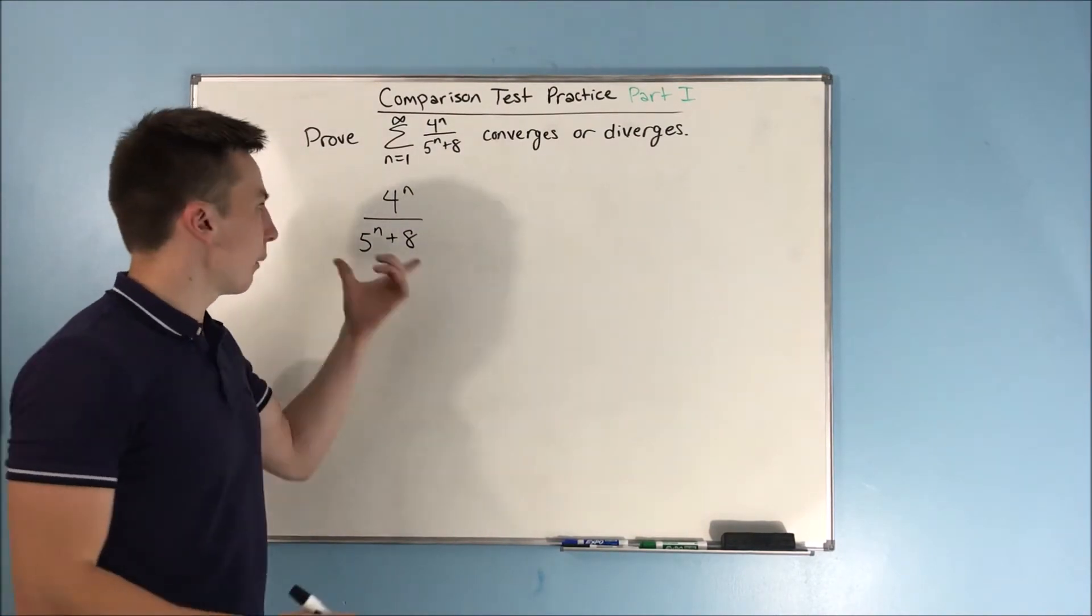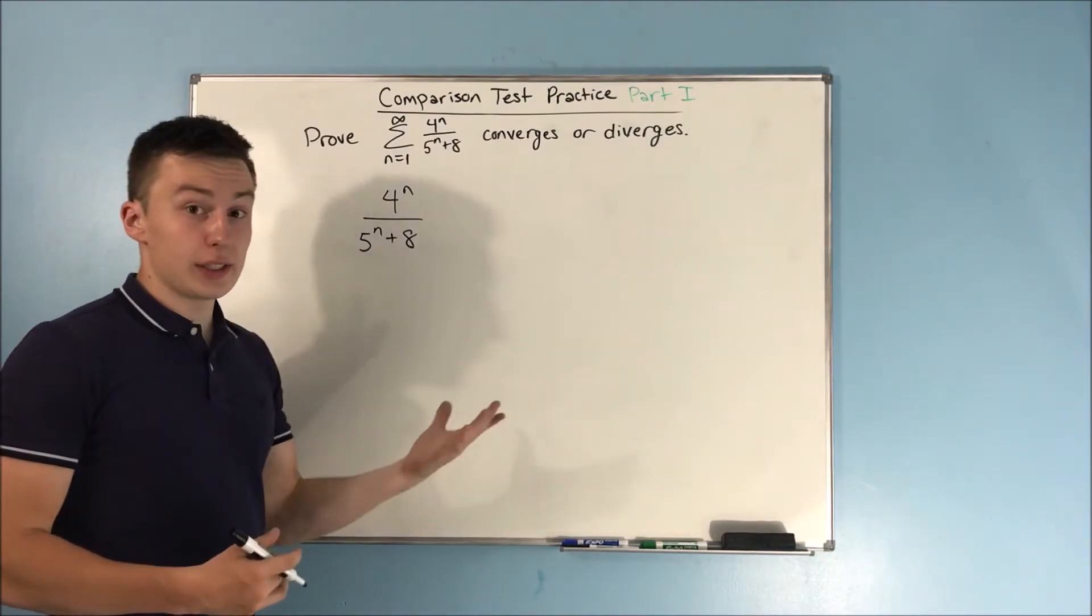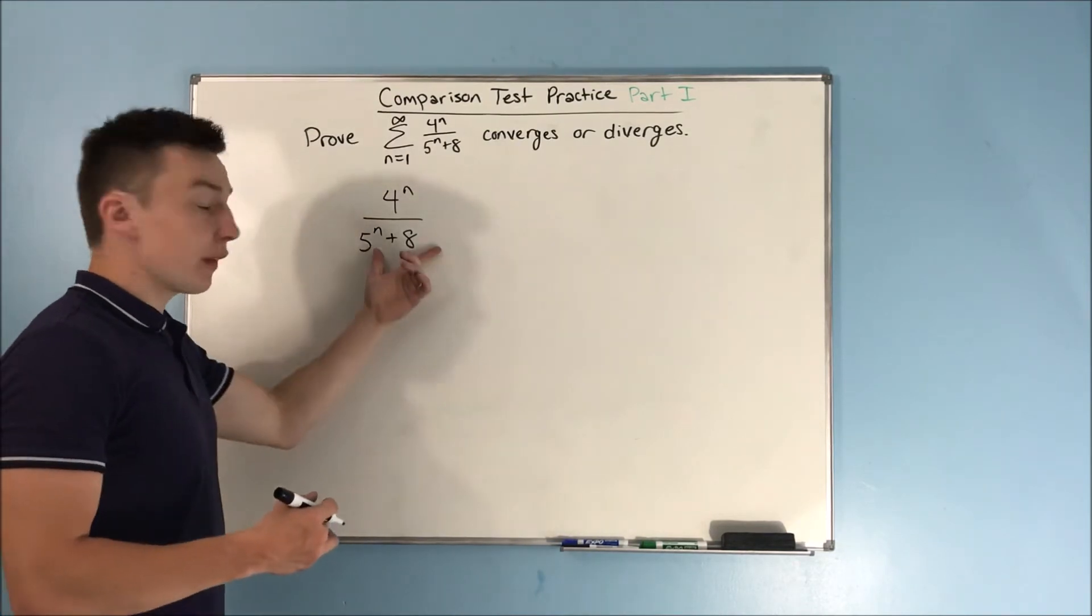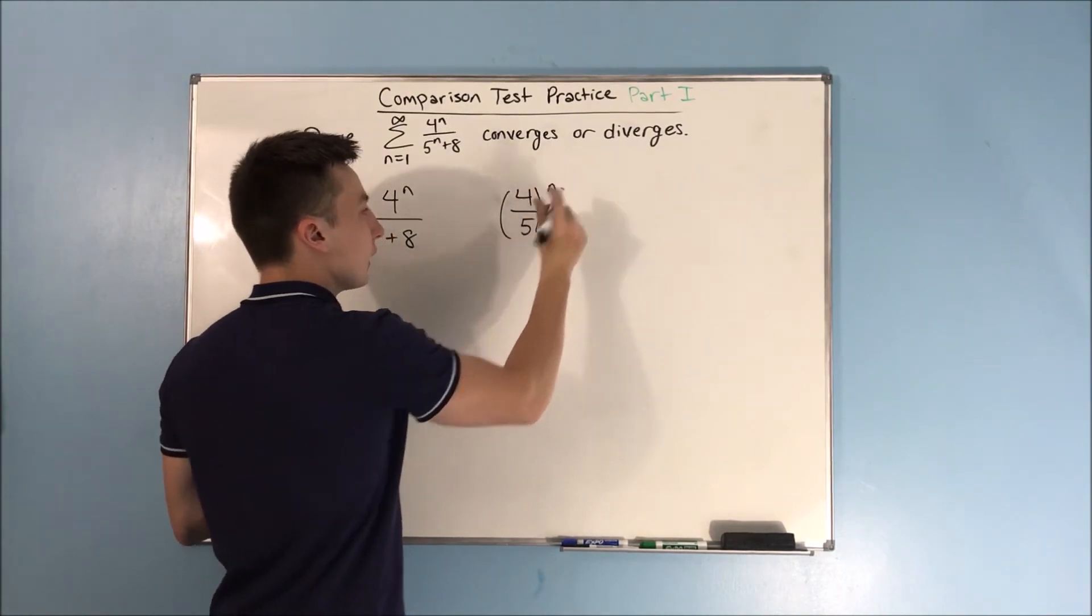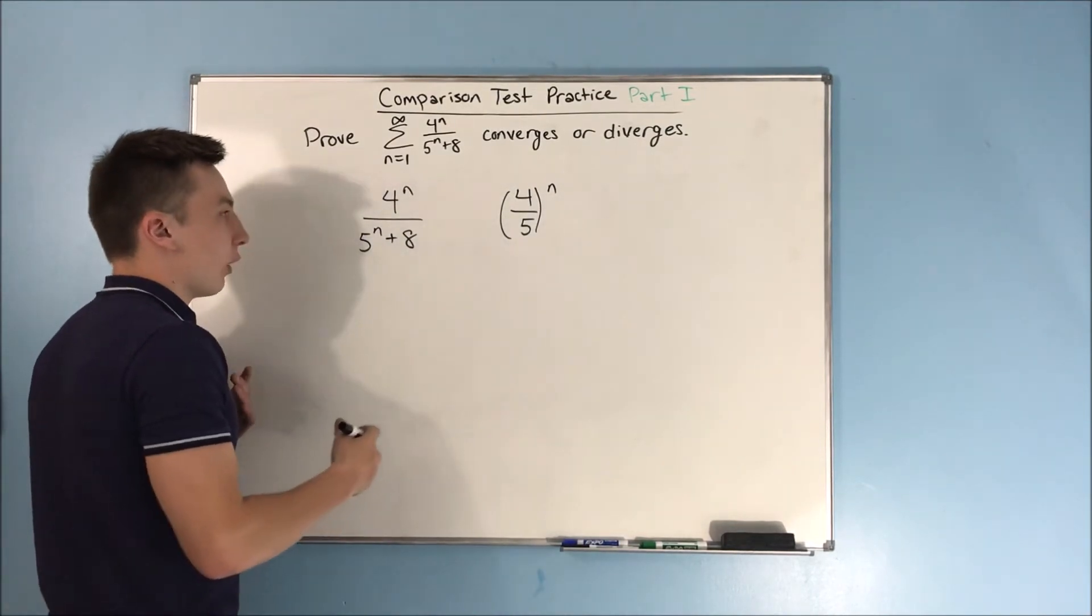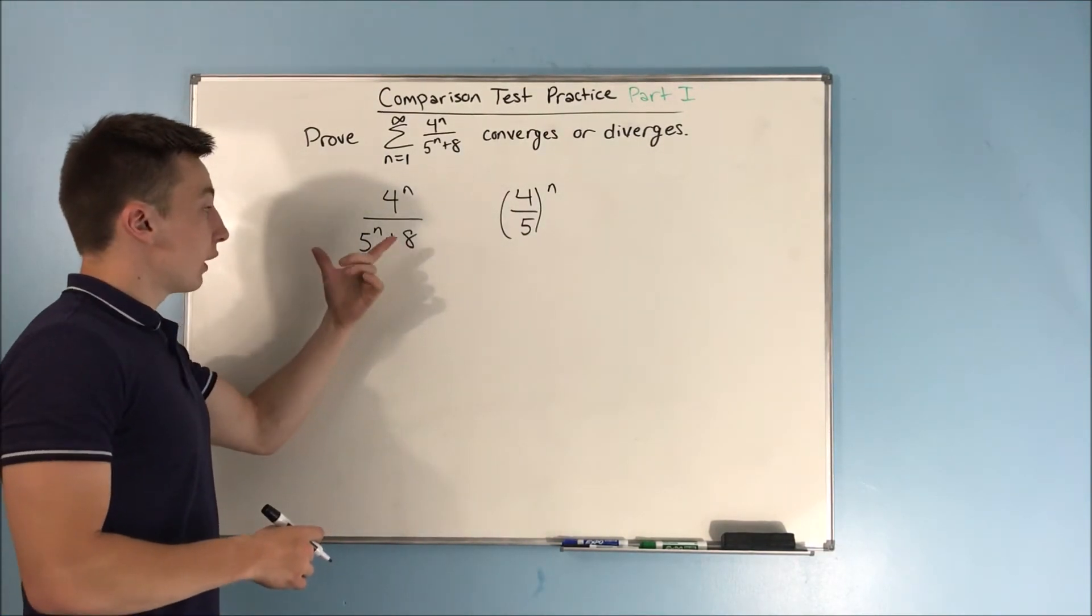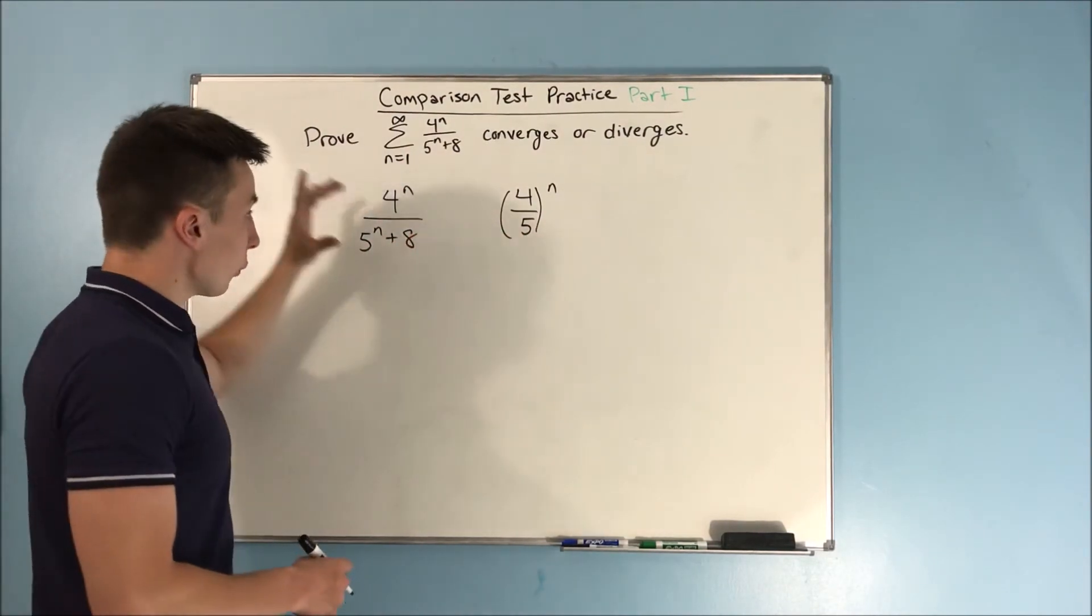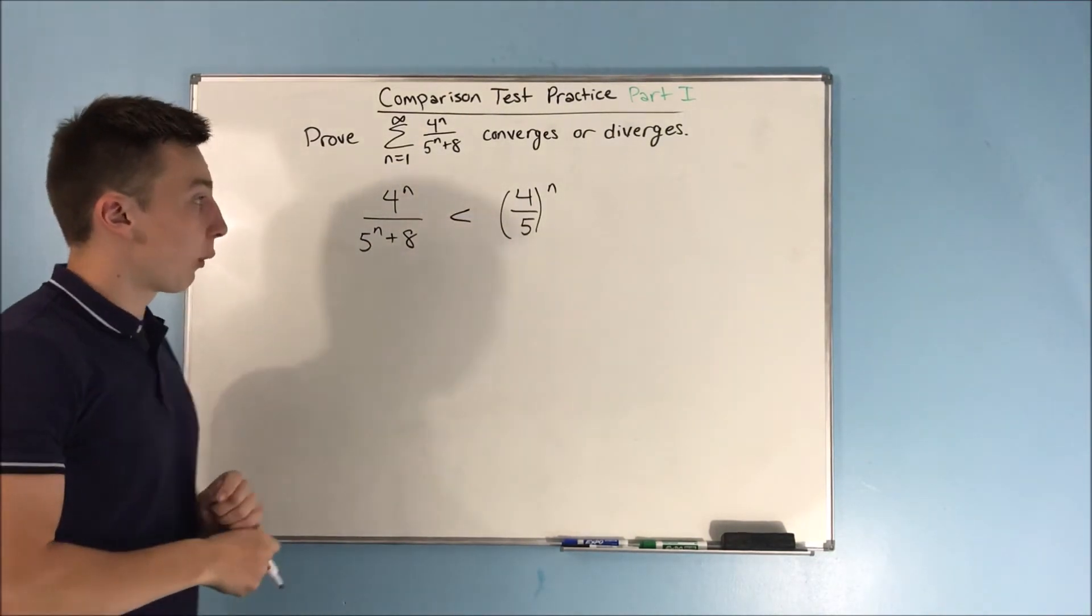The only place where n is appearing here is in a power, so this is looking a lot like a geometric series. So we can make this look even more like a geometric series if we get rid of this plus 8. And then we're just left with 4 over 5 to the n, which we can easily make into something to the n minus 1. Now, what's the difference? We have a plus 8 in the denominator, which means the denominator is going to be bigger, which means that this whole thing is going to be smaller. So this is going to be less than 4 over 5 to the n.